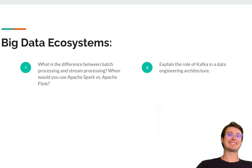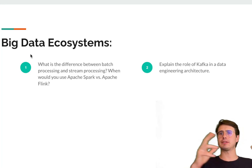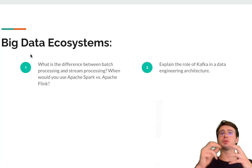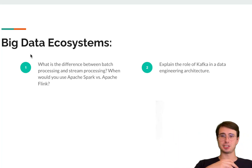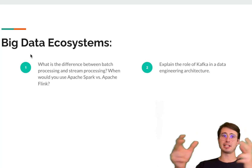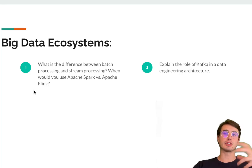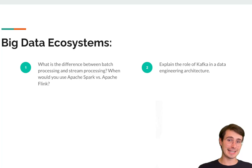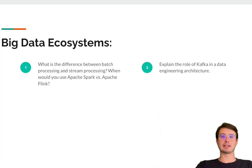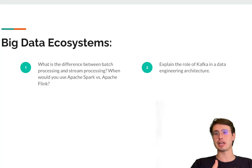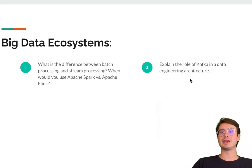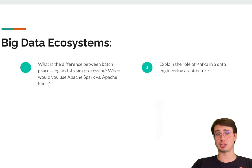Next are questions around big data ecosystems. You'll get questions like: what's the difference between stream versus batch processing? When would you want to use Apache Spark versus Apache Flink? Honestly, it's a simple question — Apache Spark is batch processing, Apache Flink is stream processing — but if you're not familiar with big data ecosystems and what these tools do, you might not have that answer on the top of your head. Compounding on that is something like: explain the role of Kafka in data engineering architecture. They're probably going to ask about a system crucial to their business and see how you think it should be used — this is as much a technical check as a compatibility check with how you think about certain big data tools.